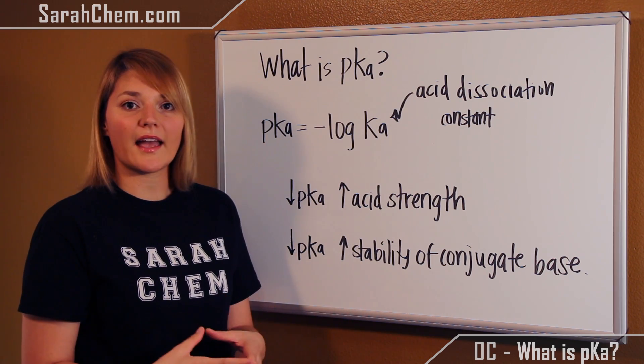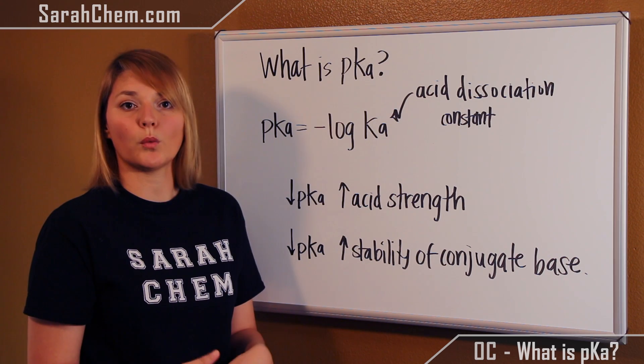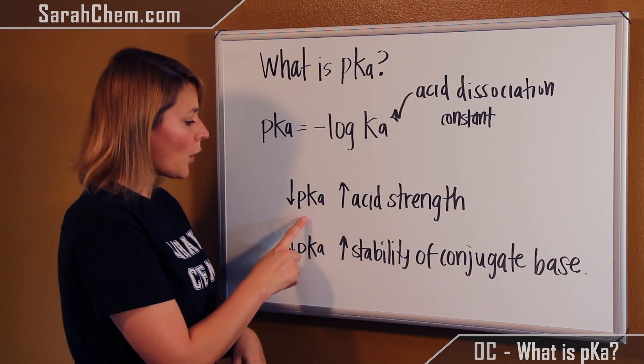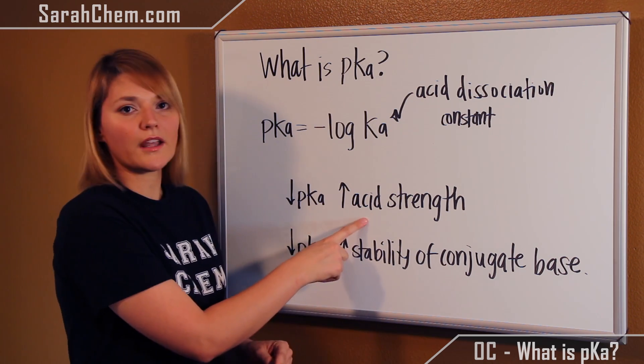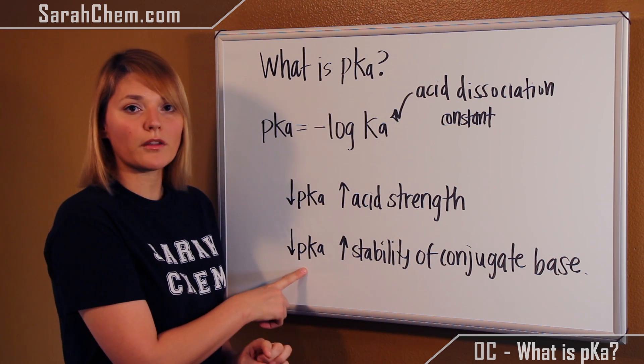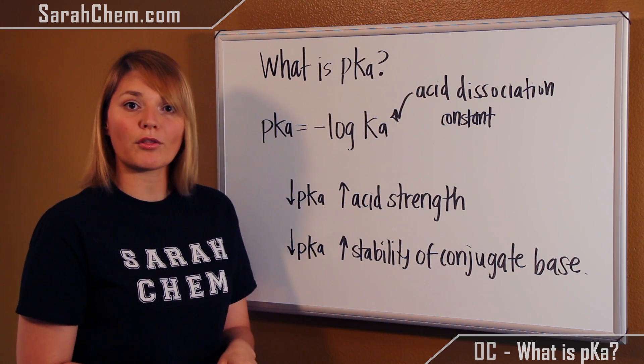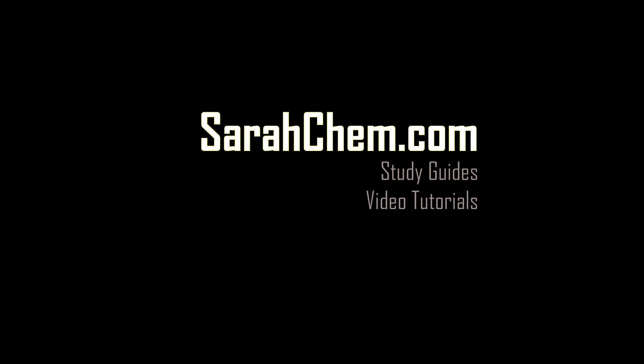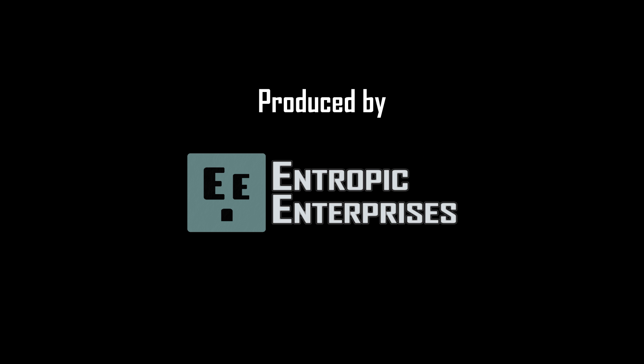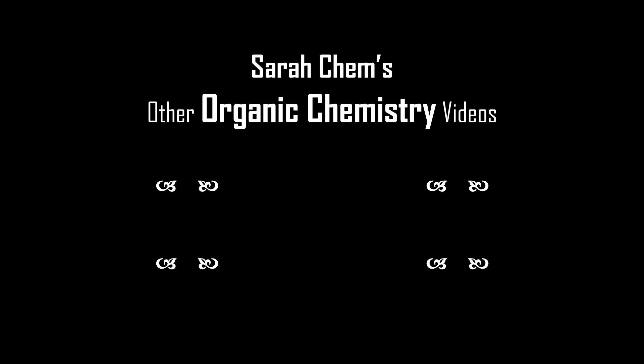The important thing about the pKa is it will tell us how strong or weak an acid is. The lower the pKa, the more strength there would be in that acid, and additionally, the lower the pKa, the more stable the conjugate base is.